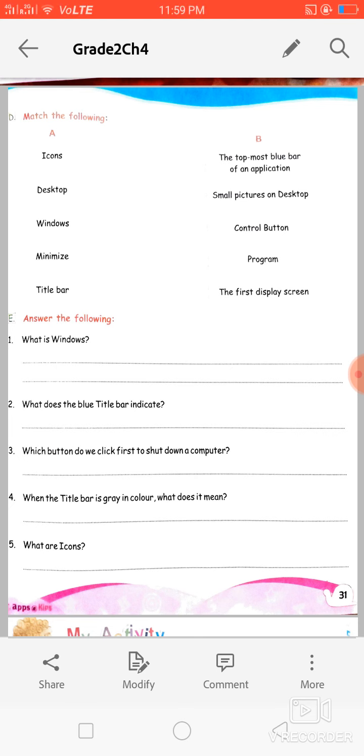Like icons - the top most bar on the application, small pictures on desktop, control button, program, the first display screen. So icons are the small pictures on the desktop, so you will match icons with small pictures on desktop. Next word is desktop. So what is desktop? After opening computer, the first window that appears is called desktop. So from this list you can write the first display screen is called desktop, so match desktop with the first display screen.